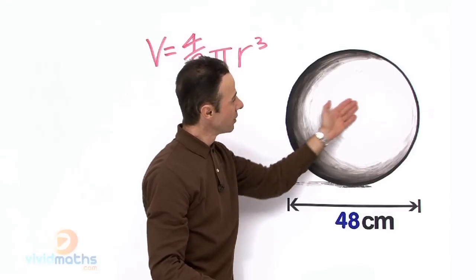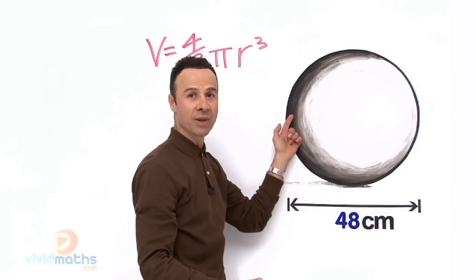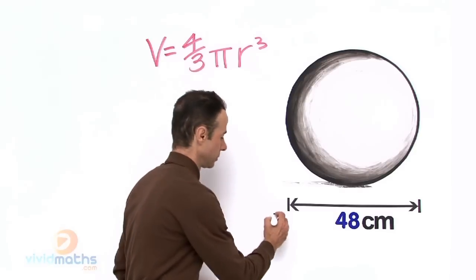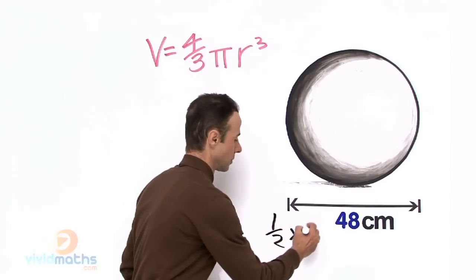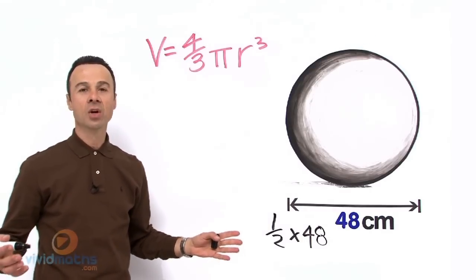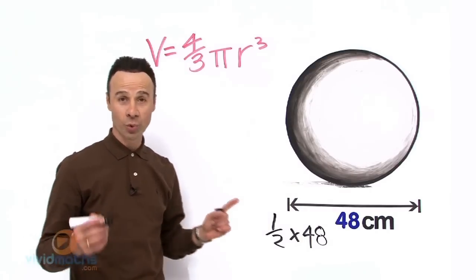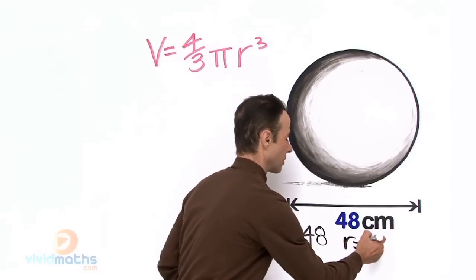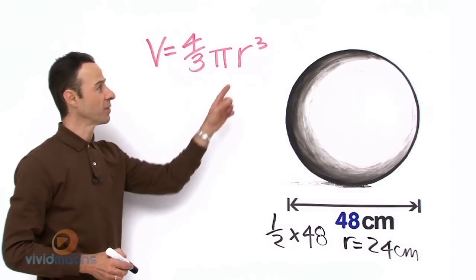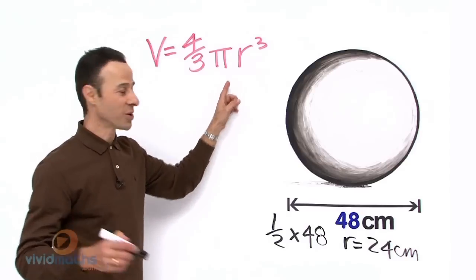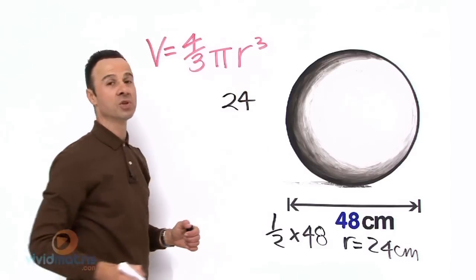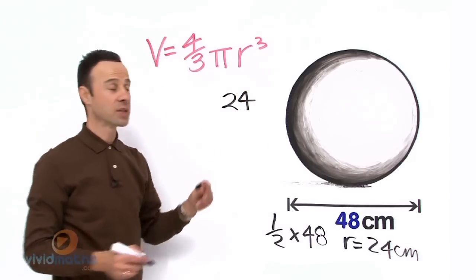In order for us to halve it to get the radius from the center to the edge, the diameter is 48, half of 48 will give us a radius for this sphere of 24. That is chopped in half, we can safely put that up in here. Let us take that 24, put it here, remember it is to the power of 3.